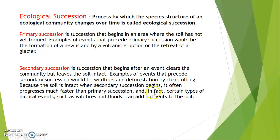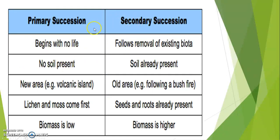The rate of succession will be more in secondary succession due to richness in nutrients and organic compounds. This is a comparative chart between primary succession and secondary succession. Primary succession begins with no life and no soil; secondary succession follows removal of existing biota. In secondary succession, there is recolonization of the community. Primary succession has no soil present; secondary succession has soil already present.